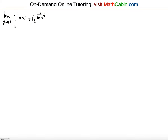Here we're trying to find the limit as x approaches 1 of ln(x^6 + 1) raised to the power 1 over ln(x^3). Notice first of all that you're going to rewrite this and have the power come down — it's going to be 6 ln x + 1 raised to the power 1 over 3 ln x. We're basically bringing the power down using the properties of logarithms.